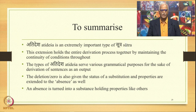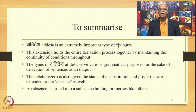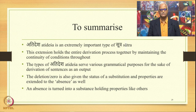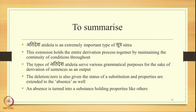To summarize, Atidesha is an extremely important type of Sutra. This extension holds the entire derivation process together by maintaining continuity of conditions throughout the process of derivation. The types of Atidesha serve various grammatical purposes for the sake of deriving sentences as output. The deletion or zero is also given the status of substitution and properties are extended to the absence as well — an absence is turned into a substance holding properties like others. This is a unique contribution of Paninian grammar. The sixth type of Sutra, Adhikara, remains to be studied and will be covered in the next lecture.